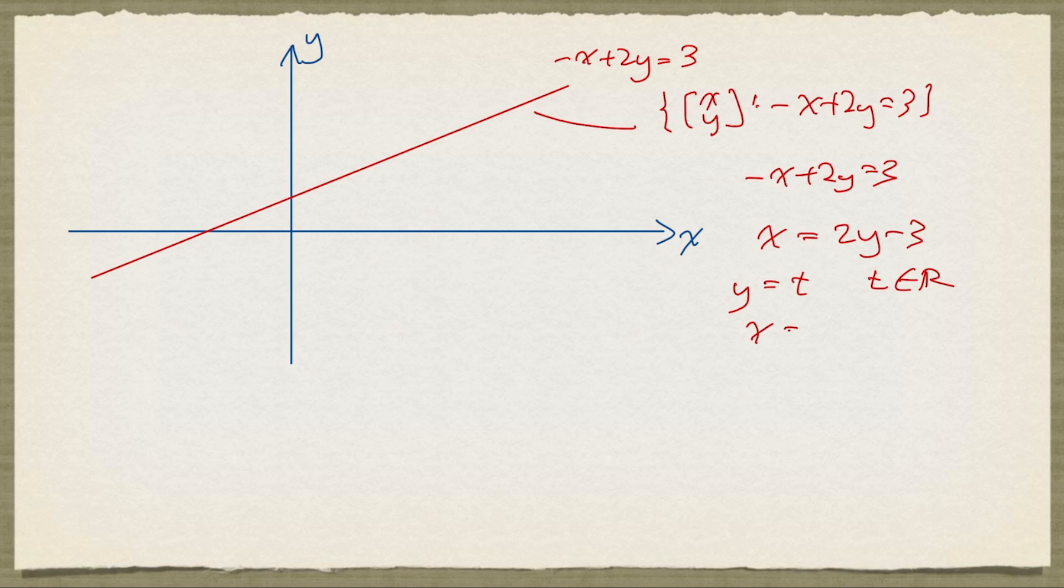then x is given by 2t minus 3. So another way to write the set of points on this red line is (2t minus 3, t) such that t is any real number.